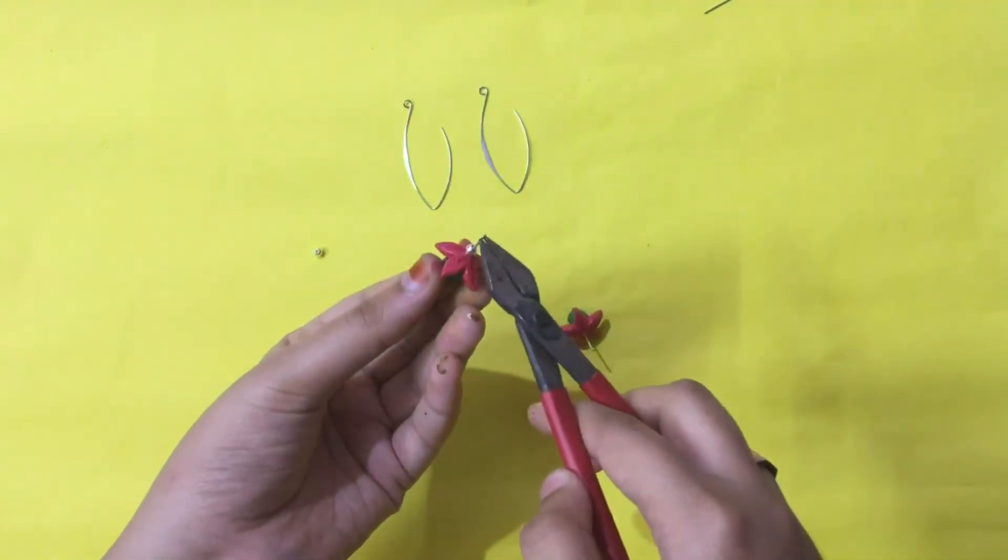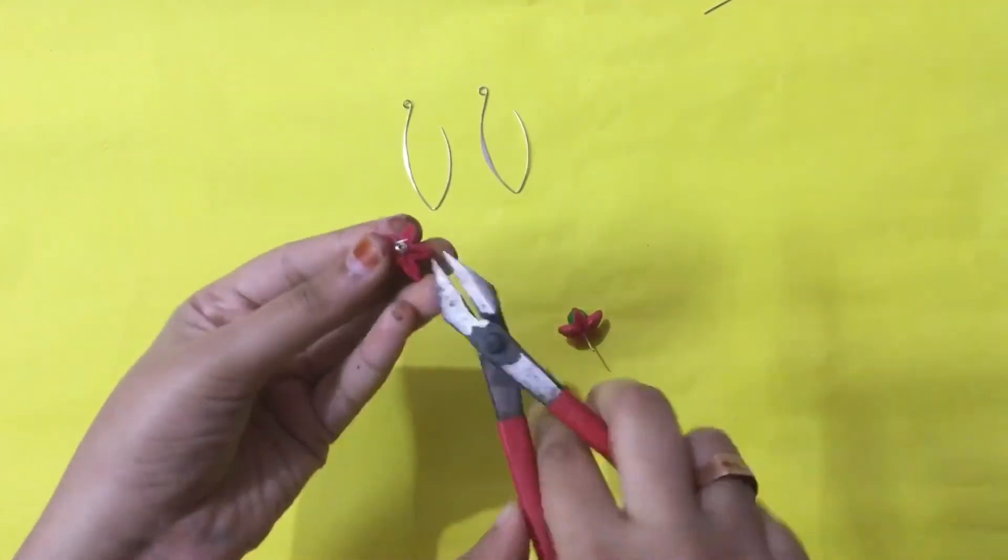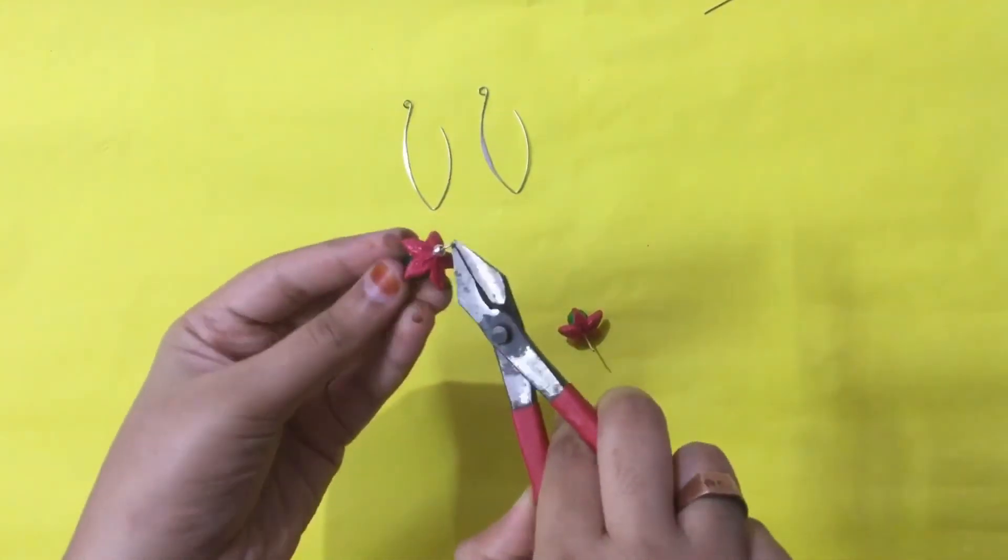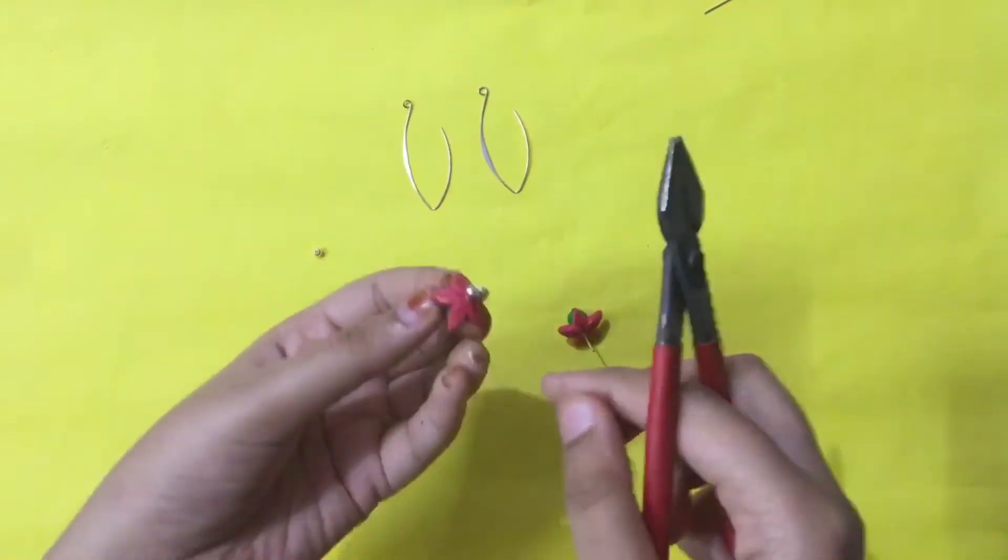We are almost done. We'll just turn the remaining part into a hook and we'll attach that to the upper part.